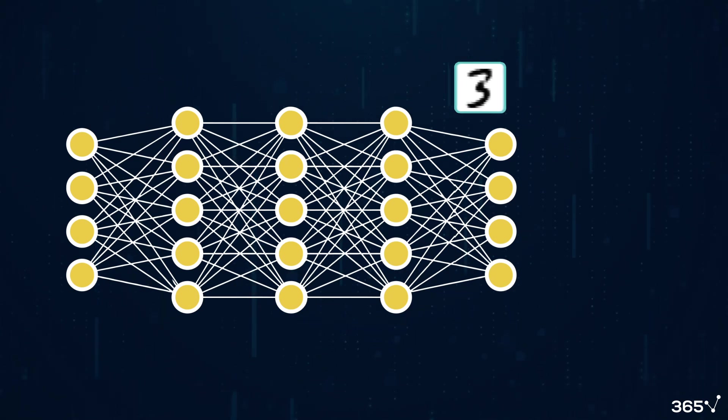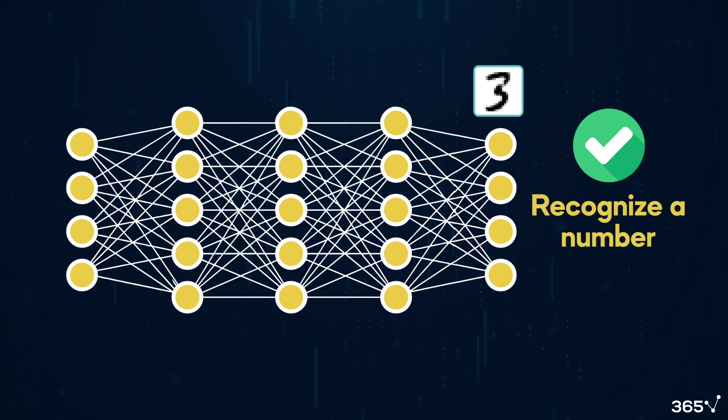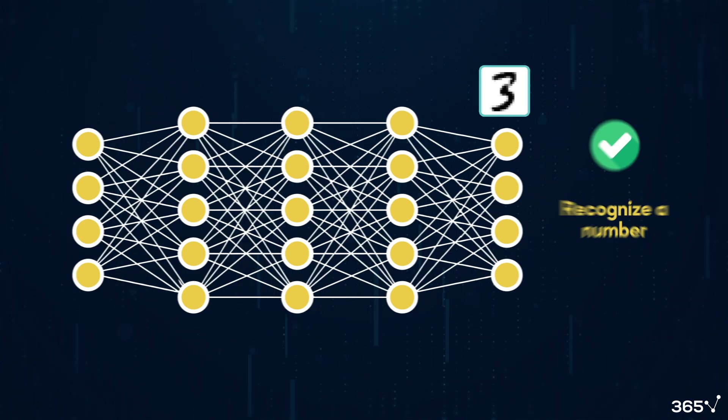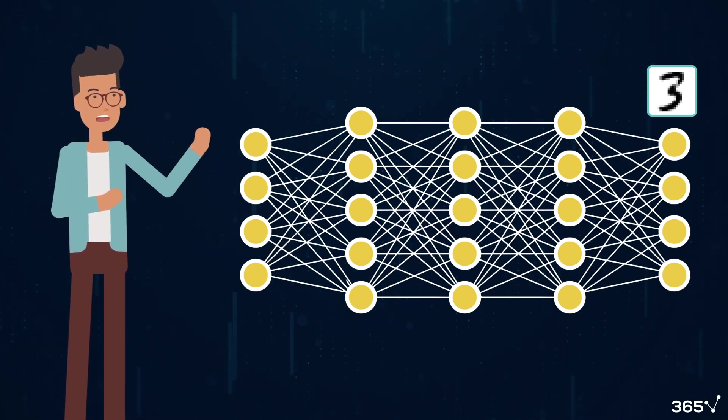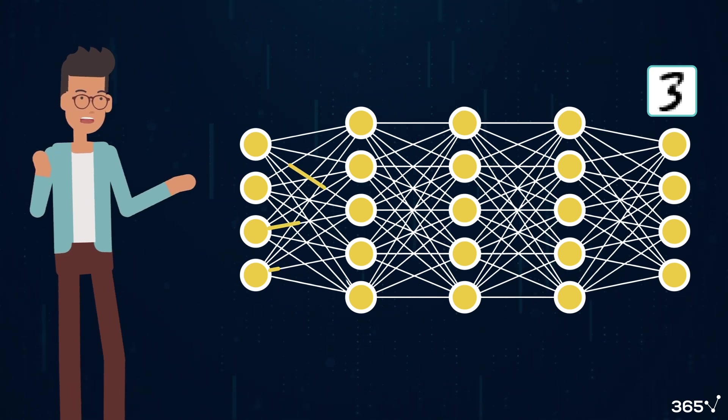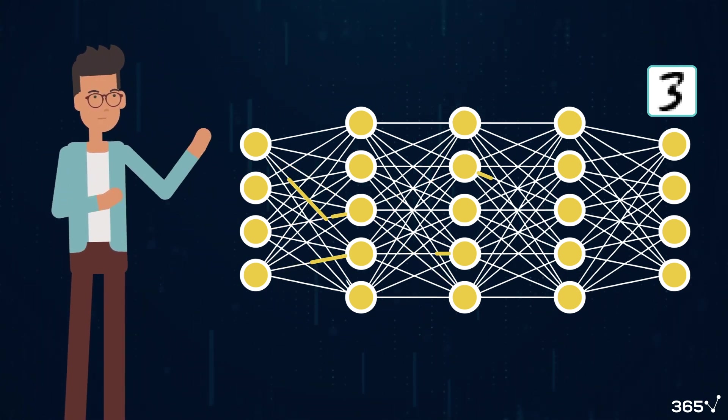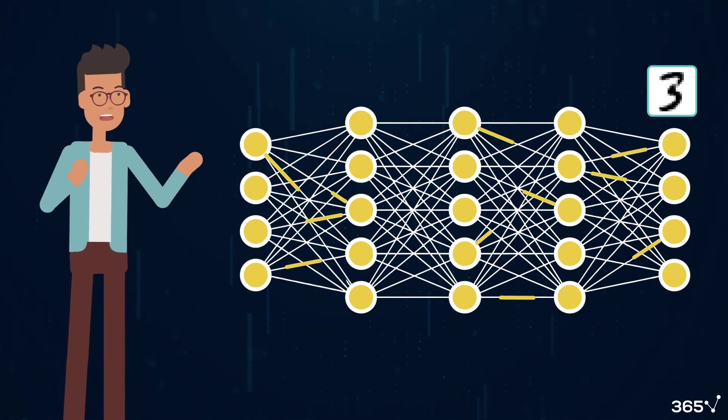Finally, the output layer takes the processed data from the last hidden layer and determines whether the digit is a 3. This is how a neural network learns to perform what appears to be a simple task, recognizing a number. The underlying process, however, involves intricate mathematical manipulations, which we didn't describe fully.